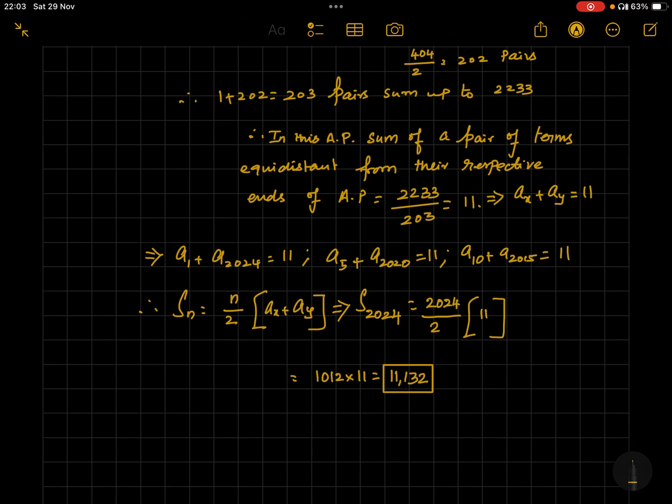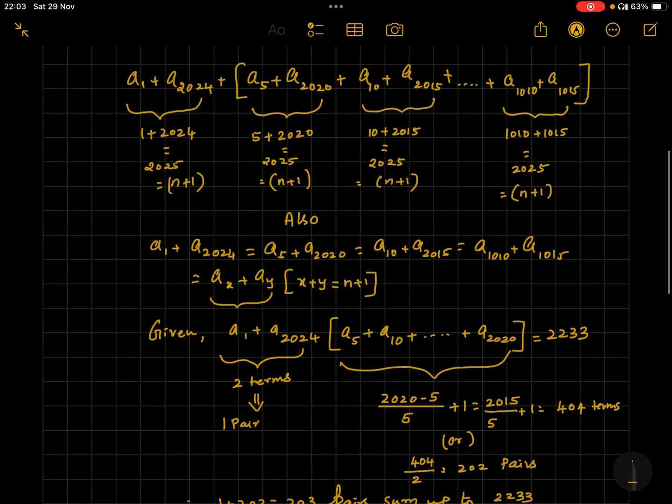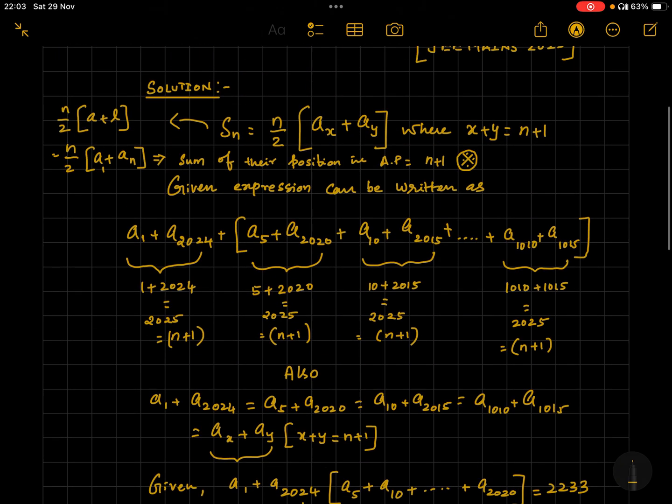So we have just finished the solution, and this is an important formula. Many of you would have probably known, but you may not be knowing how to operate or derive it. Rather, I can say n by 2 into a plus l itself has been derived from this only, because a is the first term, position 1, and l is the nth term. So 1 plus n equals n plus 1. It's obviously a fantastic problem.